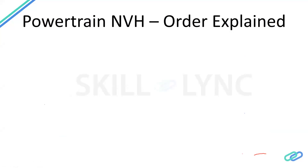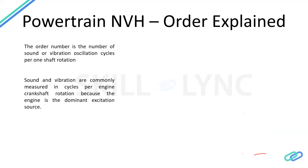Before going into powertrain NVH, I want to explain the concept of 'order.' We use order as our baseline because it allows us to identify specific excitations — for example, this is the engine order, or this is the gear excitation order. Order is the number of sound or vibration events occurring per cycle. Sound and vibration are commonly measured in cycles per second (frequency), but we always measure with respect to crankshaft rotation.